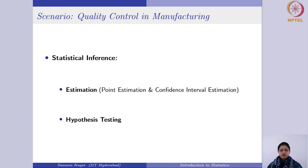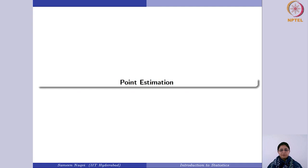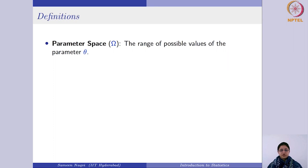Today we begin with point estimation. Let us first understand the important term: parameter space. Parameter space is usually denoted by omega, and it is basically the range of possible values for the population parameter. Whatever your population parameter is, the possible values that it can take define the parameter space.